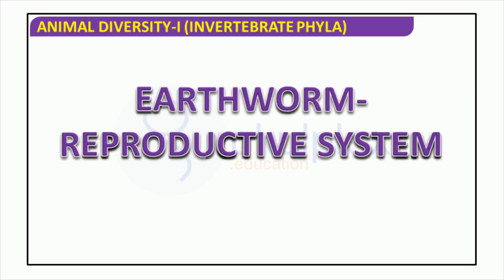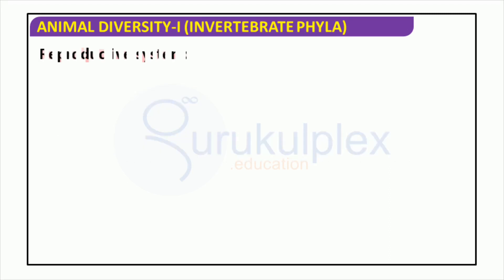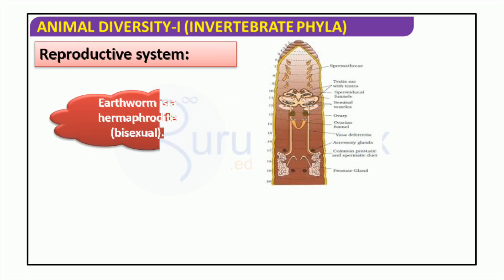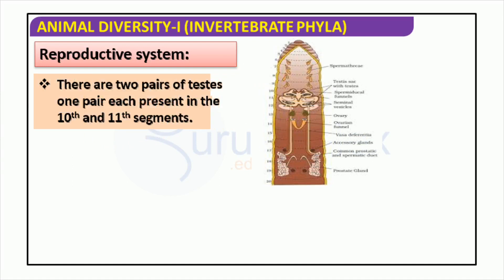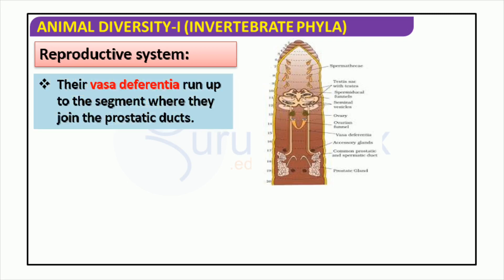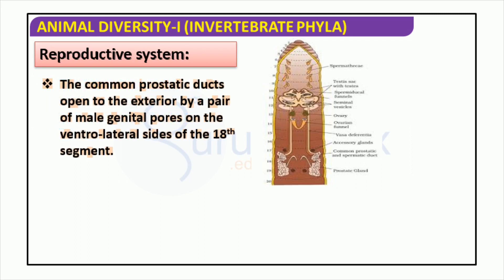Earthworms are incredibly important to ecosystems. They are hermaphroditic, containing both male and female reproductive organs. During the process of reproduction, they exchange sperm and gametes. Afterward, the female organs create the cocoon in which the fertilized eggs develop. Earthworms usually self-fertilize, though cross-fertilization is possible. On its 10th and 11th segments, two pairs of testes are present, as well as two pairs of seminal vesicles on its 11th and 12th segments. The vasa deferentia link these segments to the prostatic ducts, and the male genital pores are seated on the ventrolateral sides of the 18th segment. This sophisticated arrangement aids the earthworm in reproduction.